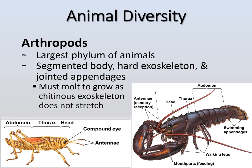As arthropods grow, something special about that exoskeleton is that they have to molt it because it doesn't stretch. Their skeleton is on the outside of their body rather than inside, so as they grow inside of it, they shed it — a process called molting — and then grow a new chitinous exoskeleton. Chitin is a polysaccharide, like glycogen, starch, and cellulose.